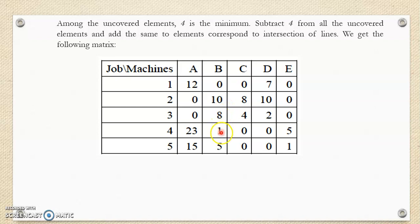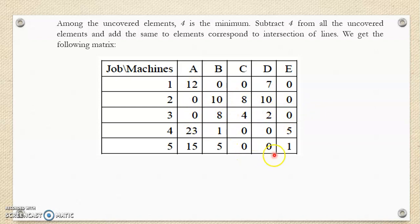Once we get the new matrix, we check for optimality again by starting the assignment process. However, this table has multiple zeros in all rows, so we cannot initiate the first assignment along the rows. Checking columns sequentially: the first column has multiple zeros, but the second column has only one zero. Therefore, we make the first assignment there and cross corresponding zeros in that row. Now check again for rows or columns with exactly one zero, but there is no further possibility — the remaining rows and columns all have multiple zeros. This is explained in the next slide.